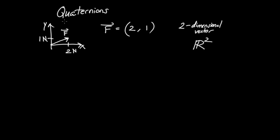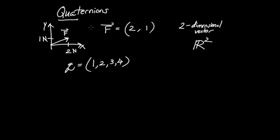For the quaternions, as you may guess from the prefix 'quat' or 'quater,' we have four-dimensional objects. Such a four-dimensional object might look like (1, 2, 3, 4), and that is an example of a quaternion. So in terms of what these mathematical objects are, they're just four-dimensional vectors living in the set R⁴, as opposed to two-dimensional vectors living in R².